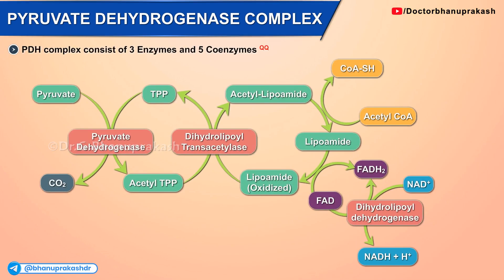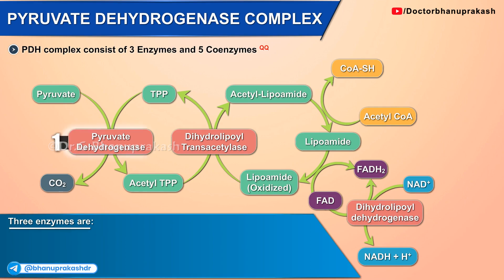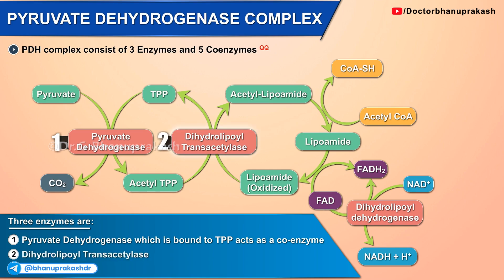This complex consists of three enzymes and five coenzymes. The three enzymes are: pyruvate dehydrogenase, which is bound to TPP and acts as a coenzyme; dihydrolipoyl transacetylase; and dihydrolipoyl dehydrogenase.